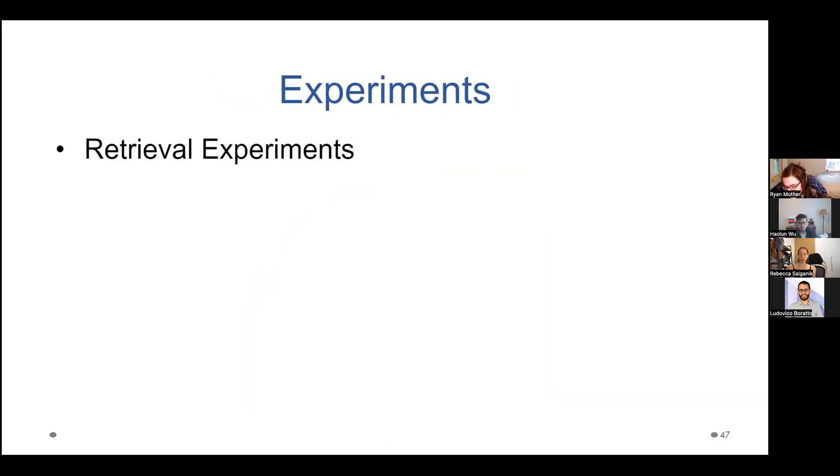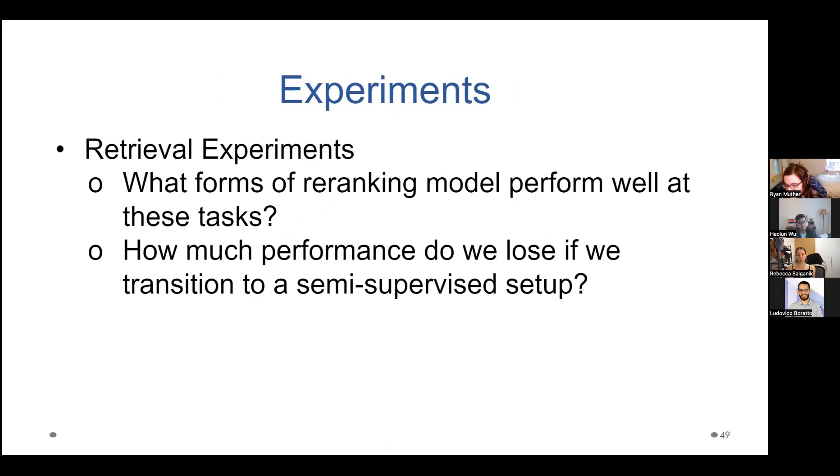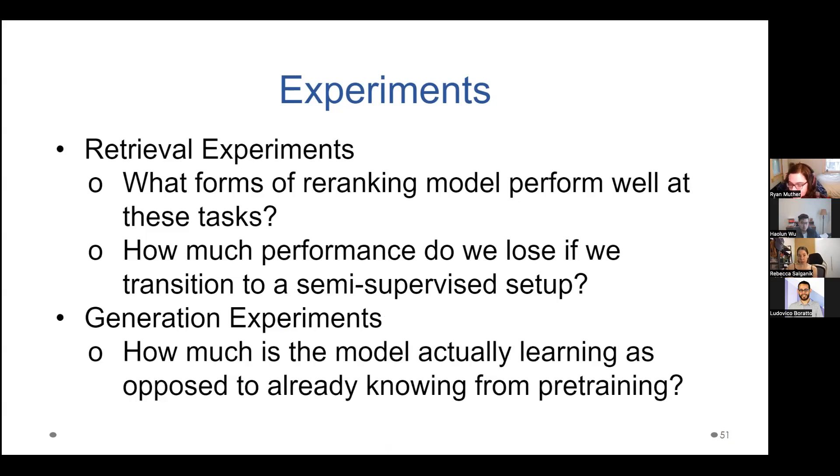So as far as our experiments go, we're going to talk about two separate things. We have our retrieval experiments, which is largely what I've been hinting at so far, where we're going to say how well can these models actually learn how to do this source attribution via re-ranking? What forms of model are good at this? And how much performance do we lose if we try some semi-supervised methods? And then we're going to look at some generation experiments. And this is particularly focused on Wikipedia because it could be that, for instance, a lot of why it's good at generating link names is that it has perhaps memorized portions of Wikipedia. Because, for instance, things like BART are probably trained on Wikipedia. So has it actually memorized the data or is it actually learning something from this pre-training process?